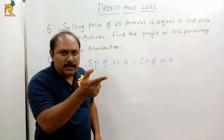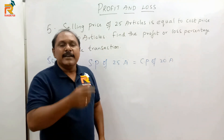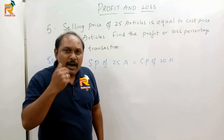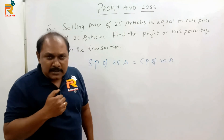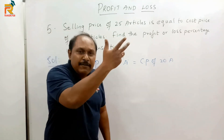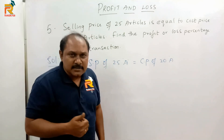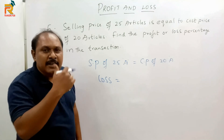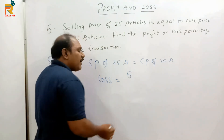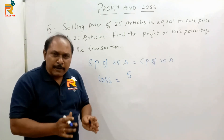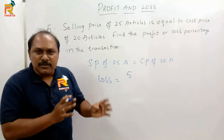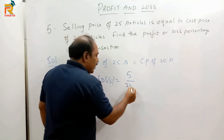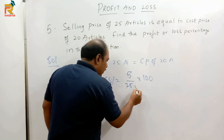Think like this: selling price of 25 articles equals cost price of 20 articles — the money spent to buy 20 articles is the same as the money received by selling 25 articles. So you are selling more articles than you purchased to get back the same money. You purchased 20 articles but are giving away 25, so you are losing 5 articles. Loss percentage calculated on the quantity sold (25 articles): 5 divided by 25 into 100 equals 1/5, and 1/5 equals 20%. The loss percentage is 20%.